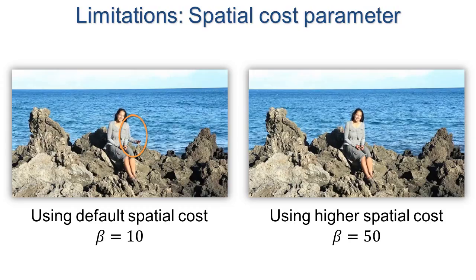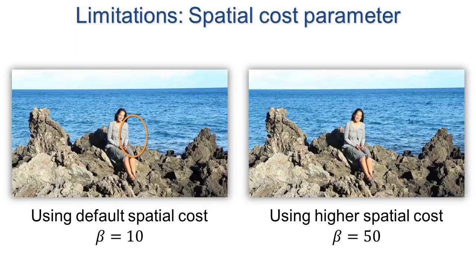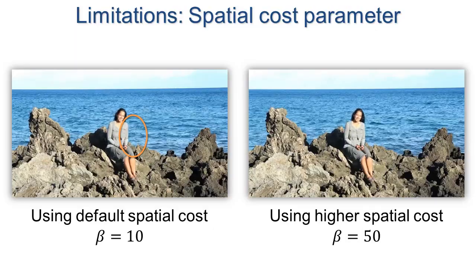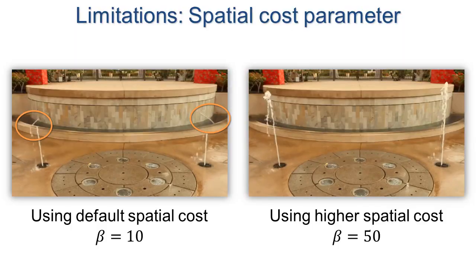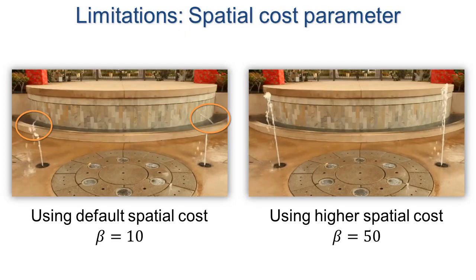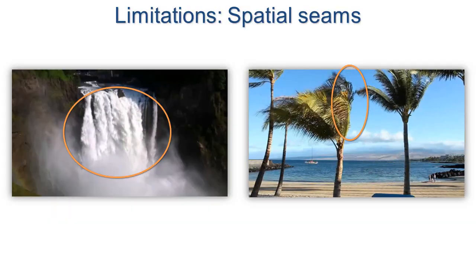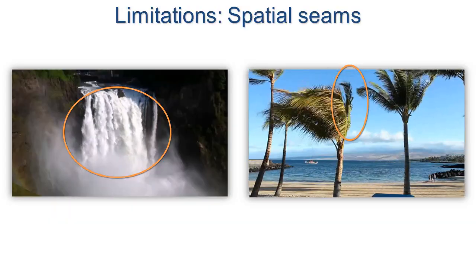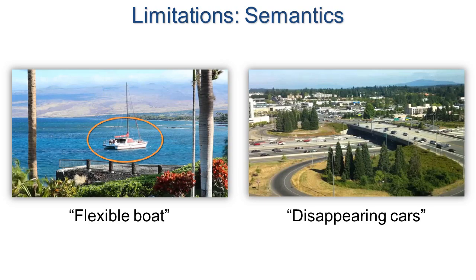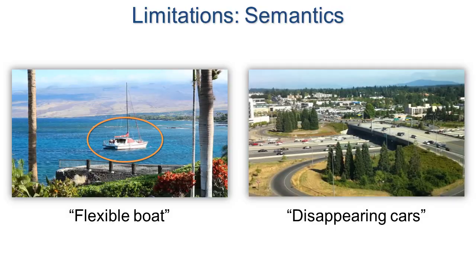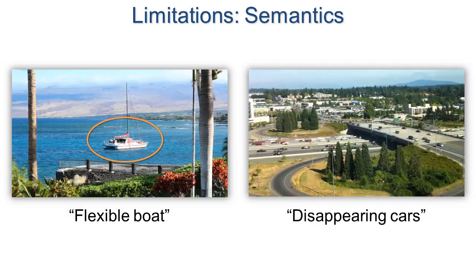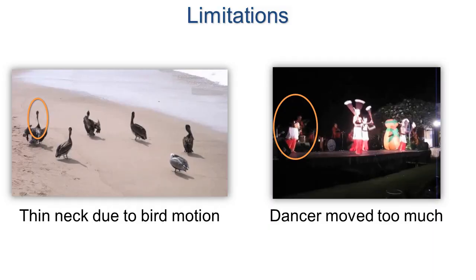In some cases, it would be nice to adapt the default parameter settings based on the content of the video. For large scene motions, spatial seams may be unavoidable. Sometimes the video loop is visually plausible but semantically incorrect. Here are some more examples of artifacts due to scene motion.